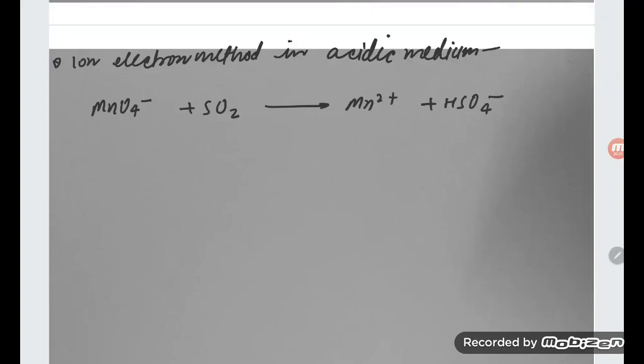Hello student, let us see the problem. What is the problem? Iron electron method in acidic medium. So this is MnO4, SO2, Mn2+ plus HSO4.